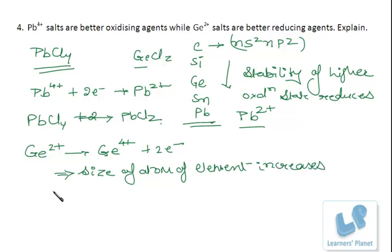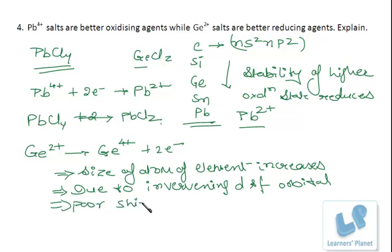Number of shells are there. Now, due to intervening d and f orbitals, there is poor shielding effect.